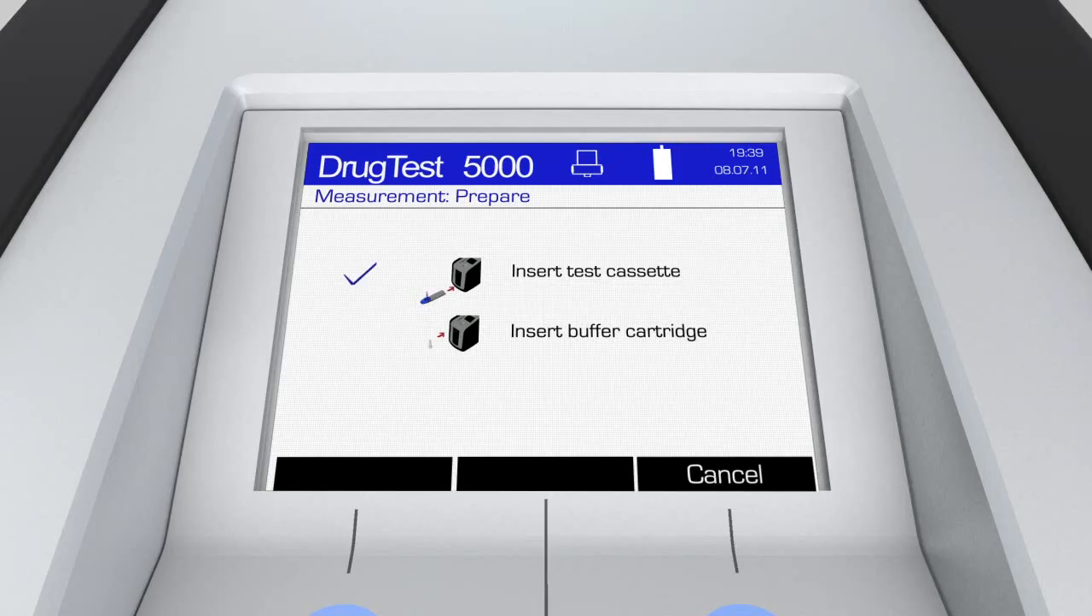Open the door of the analyzer and follow the simple instructions on the display. Slide the test cassette into the lower compartment until it audibly locks.